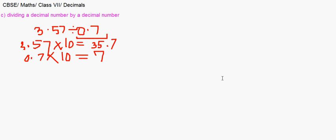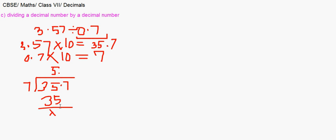Performing 35.7 ÷ 7: 7 into 35 gives 5, no remainder; bring down 7, and 7 into 7 gives 1. The answer is 5.1. When you have a decimal in the divisor, this conversion method is the better approach.